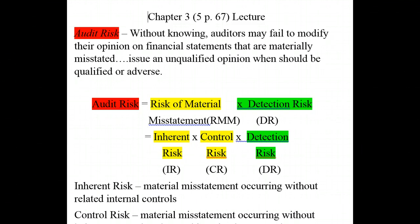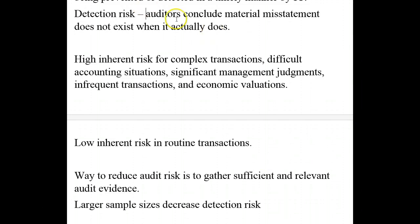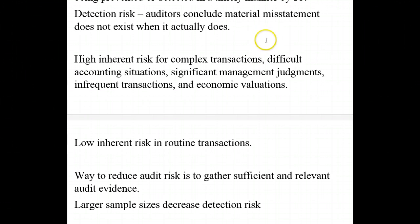Along with the risk of material misstatement, we also have detection risk. Detection risk is when auditors conclude a material misstatement does not exist when it actually does. Detection risk is the risk that auditors run when there is a material misstatement, but our audit procedures — whether analytical procedures or substantive audit procedures — fail to detect that material misstatement.